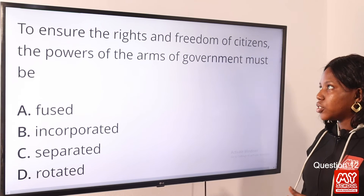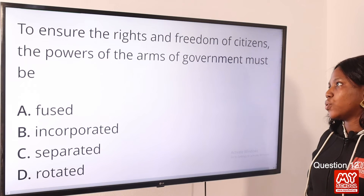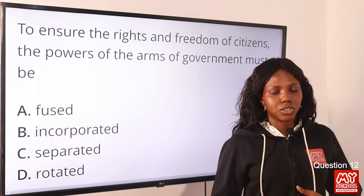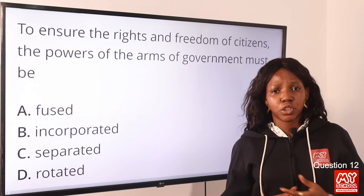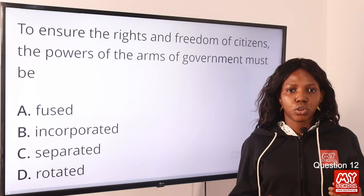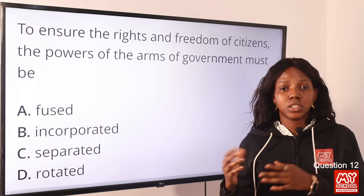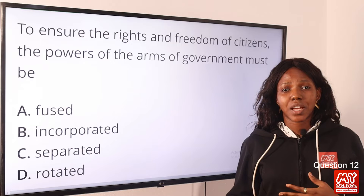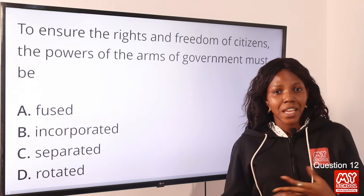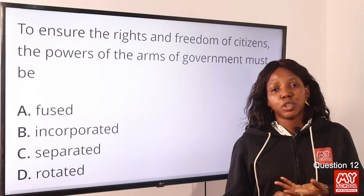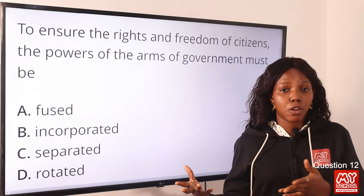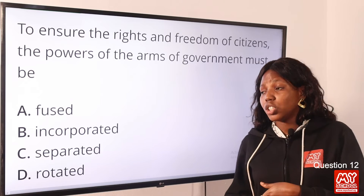Question 12: To ensure the rights and freedom of citizens, the powers of the arms of government must be — the answer is separated, option C. Separation of power is the division of functions or power of government amongst the three arms: the legislature, the executive, and the judiciary. This prevents the accumulation of power in one place and ensures that people's fundamental human rights are observed. The answer is option C, separated.